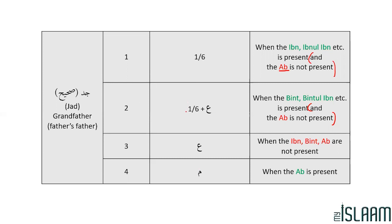We'll go over all of these conditions one by one like we did for the Ab, we'll have some practice questions, and inshallah there will also be some after-lesson questions. Mahjub comes from 'Hajaba,' which means to veil. In specific regards to Islamic Mirath, it means: because the Ab is present, the Jad has received nothing. So when one of the Zawil Furood being present leads to another one not receiving anything, we say that the second Zawil Furood who has not received anything has become Mahjub — has been deprived.